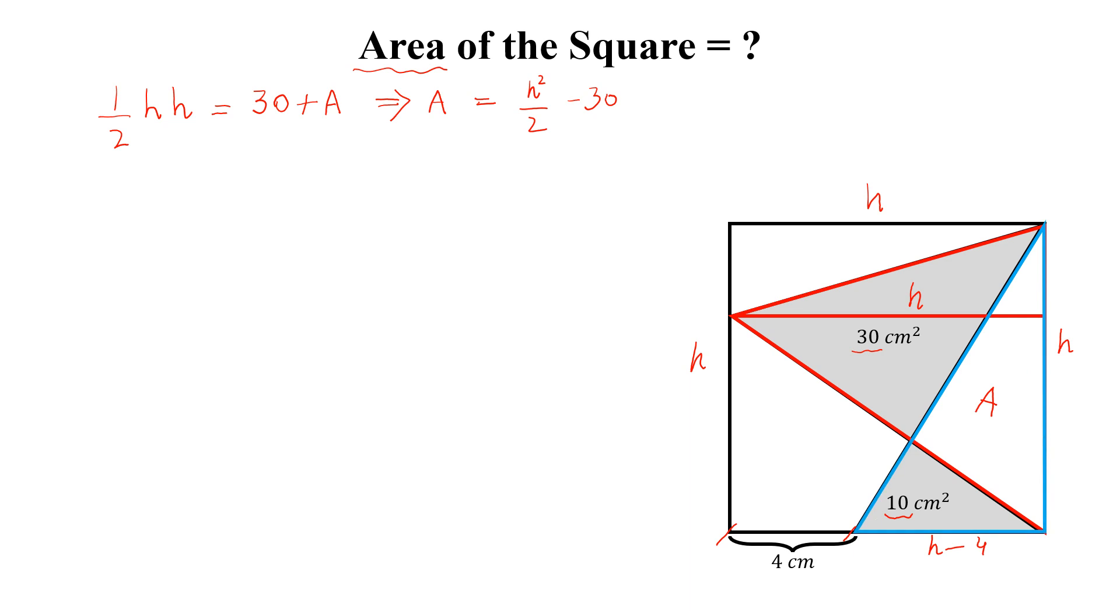Now look at this blue triangle. The area of this blue triangle will be equal to half of h into h minus 4 equal to 10 plus A.